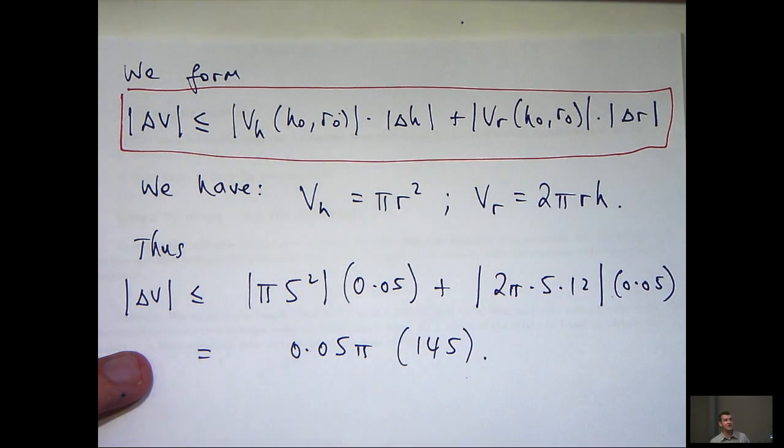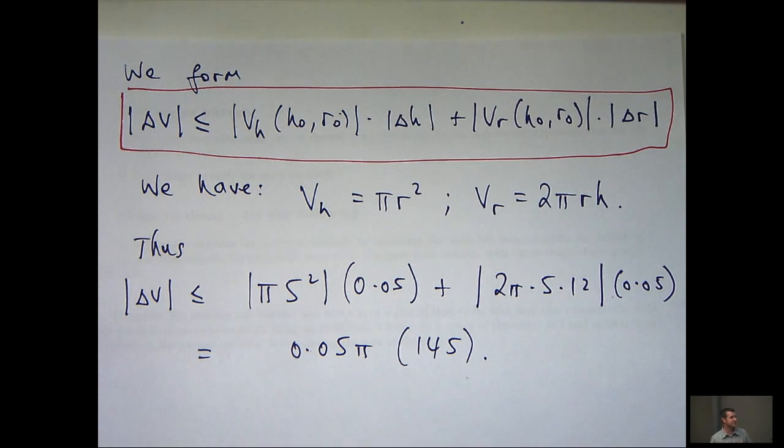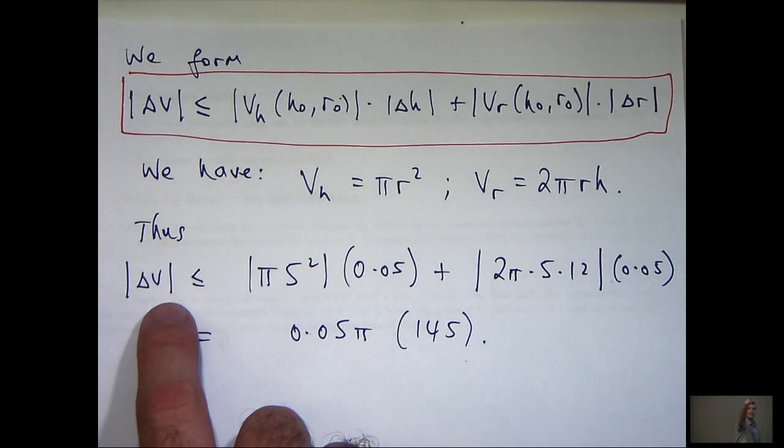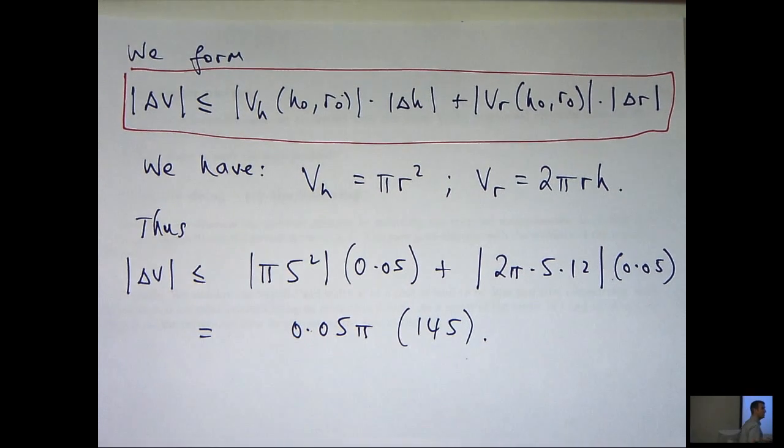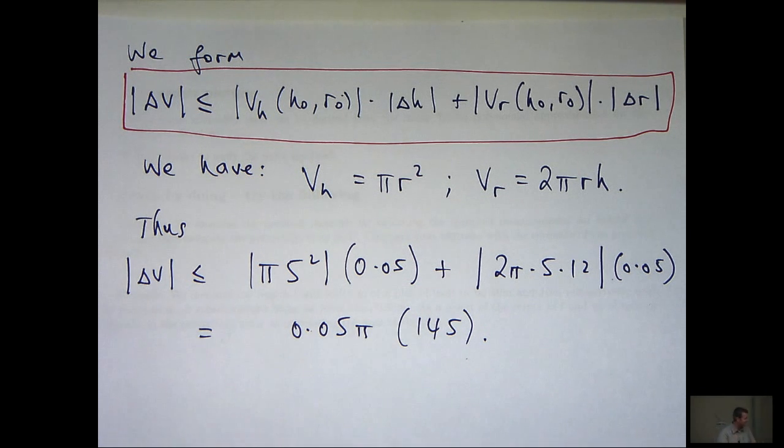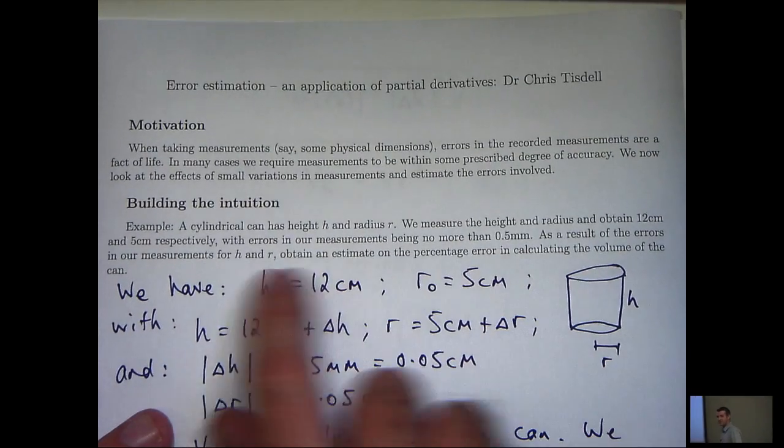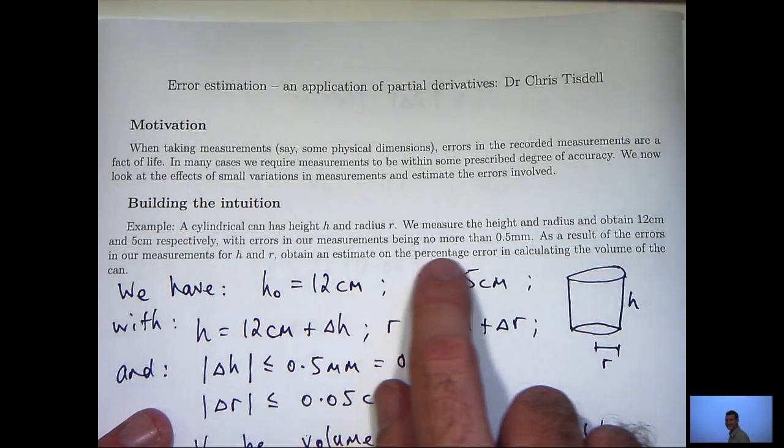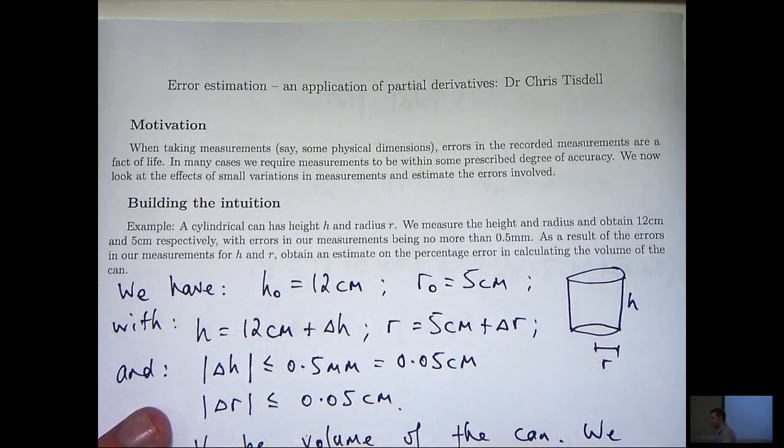I'm not going to clean that up just yet. Here's an estimate for the error in the computed volume. This is basically an estimate on the difference between the true volume of the can and our computed volume of the can. But let's go back to our question and look at what we're looking for.